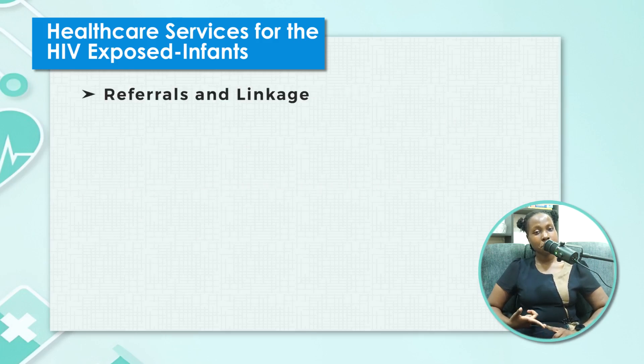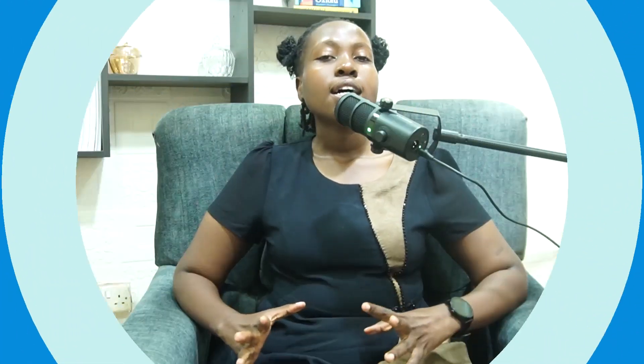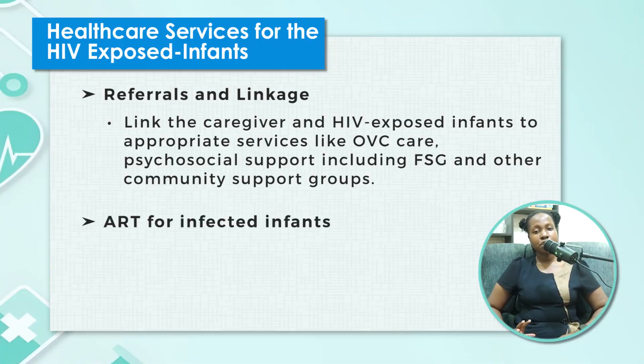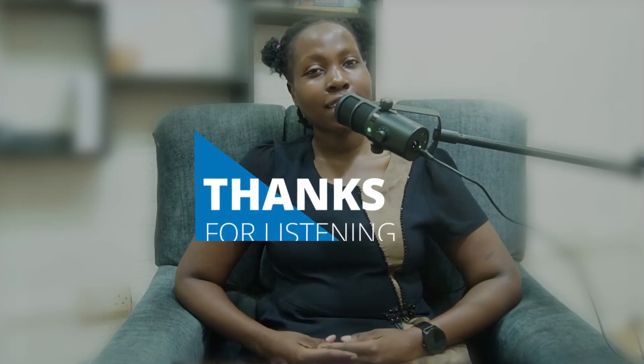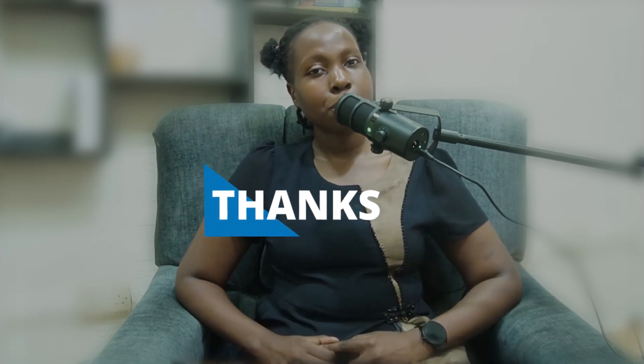Another key issue is referring these children to the right care in their communities — for example, support groups where these children can be part of a community so they don't feel isolated and can easily access ART. If the referral center is far away, connect them to services nearer to them. In case a child turns out to be HIV seropositive at the 18-month serology test, it is very important to start them on ART as soon as possible and counsel the mother on ensuring adherence to the regimen. Thank you so much for listening — I hope you are able to pick something great from this video to help you take care of your patients.